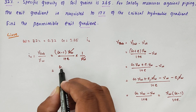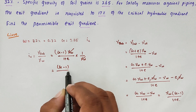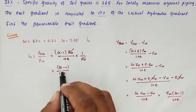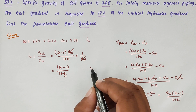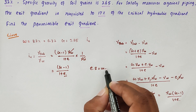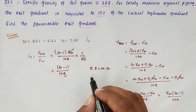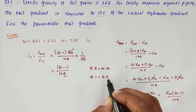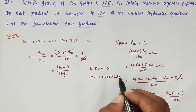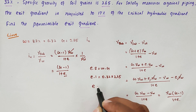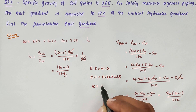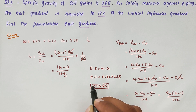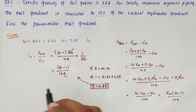Now we need to find the void ratio E. Using the relationship E·S equals W·G, and since S equals 1, we get E equals W × G, which is 0.32 × 2.65. From that, the void ratio E equals 0.848, approximately 0.85.